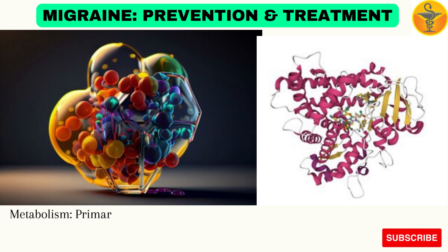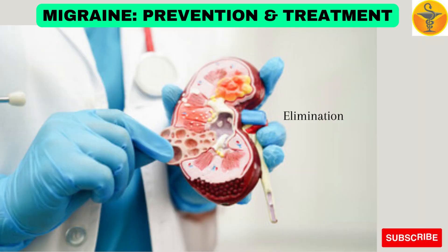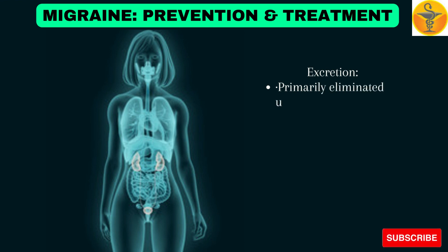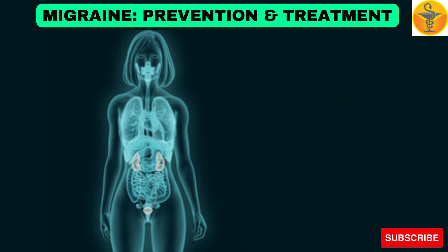Metabolism: Primarily metabolized by CYP3A4 and to a lesser extent by CYP2C9. No major metabolites detected. Elimination — Half-life: 11 hours in healthy subjects. Excretion: Primarily eliminated unchanged. Feces: 78%, 42% unchanged. Urine: 24%, 51% unchanged.